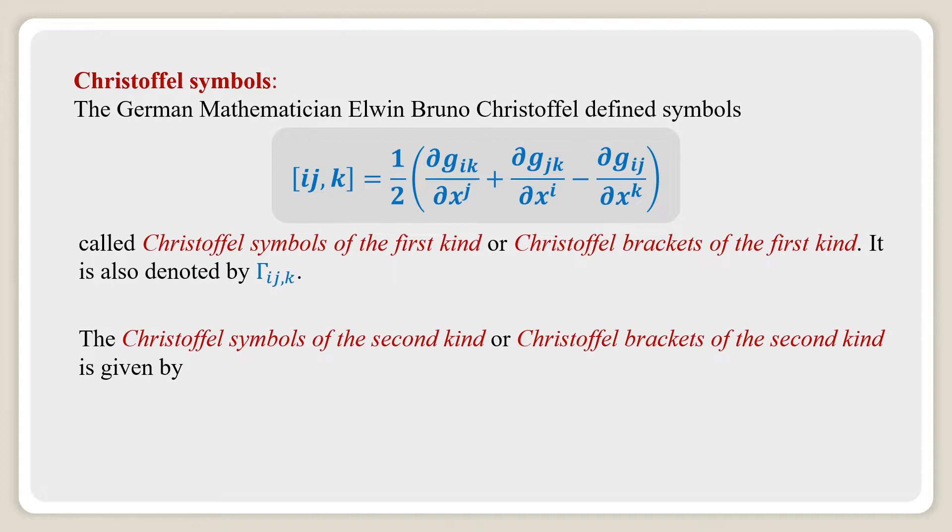The Christoffel symbols of the second kind, or Christoffel brackets of the second kind, is given by within curly braces, upper suffix is I, lower suffix is JK, which is equal to G I alpha into Christoffel symbol of first kind where the suffixes are JK comma alpha. It is also written in terms of gamma IJK equal to G I alpha gamma JK alpha.